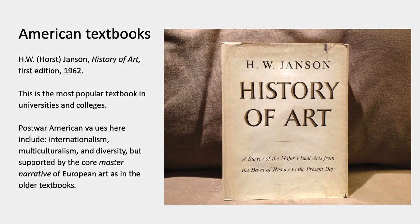There's Horst Janssen's History of Art — one of the most popular ones in universities, not so popular in art schools and academies. Postmodern American values in these books include internationalism, especially postwar North American internationalism and largesse in relation to the rest of the world. Then multiculturalism — a word that came into use slightly later — and diversity even later. Those three words pretty much go in sequence: internationalism from around World War II, multiculturalism in the 70s and 80s, diversity in the 21st century. Yet they're also supported by the core master narrative of European arts — the Greece, Rome, Middle Ages, Renaissance sequence — which is essentially the same as in the older textbooks.